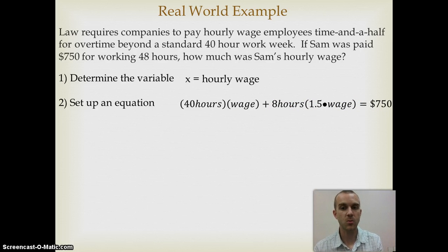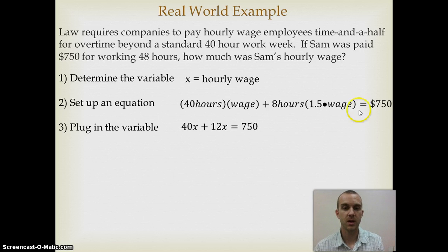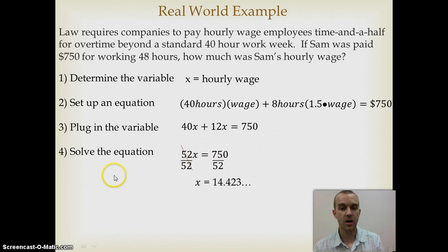Now instead of using wage, I can plug in my variable x. So if I just simplify, that becomes 40x plus, well, eight times one and a half is 12. So now I'll have to do this to continue to solve my equation. So 52x equals 750. Divide both sides by 52 and you get about 14 and 423 thousandths. But we're dealing with money, and money rounds to the nearest cent or the nearest hundredth. So we'd say that Sam made about $14.42 an hour.